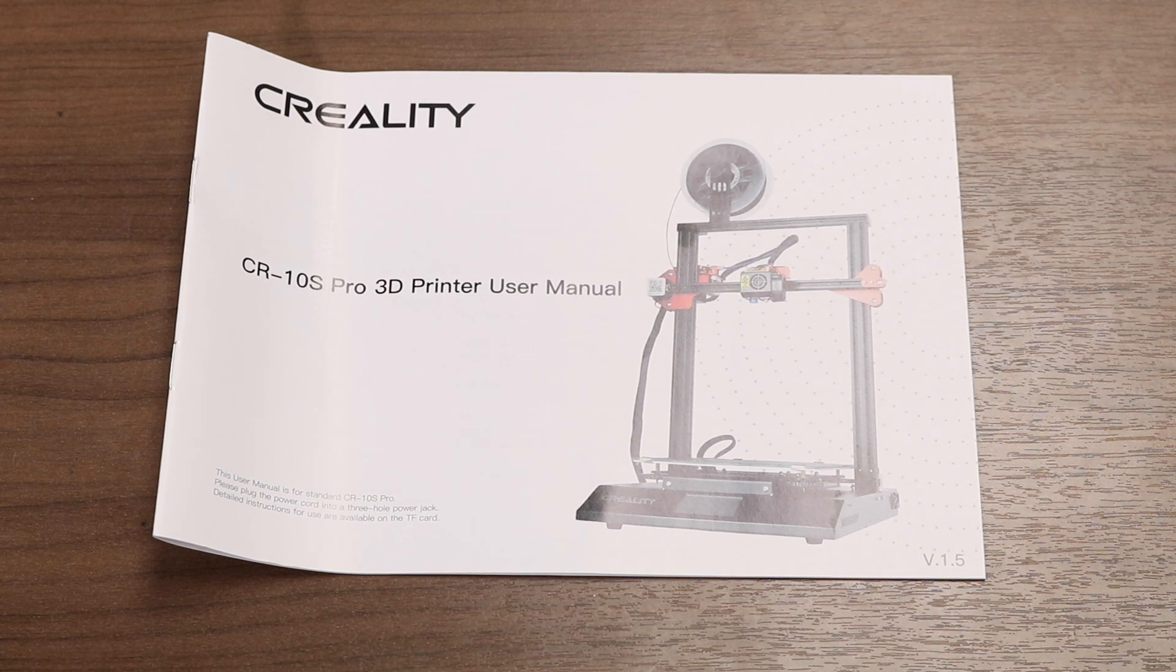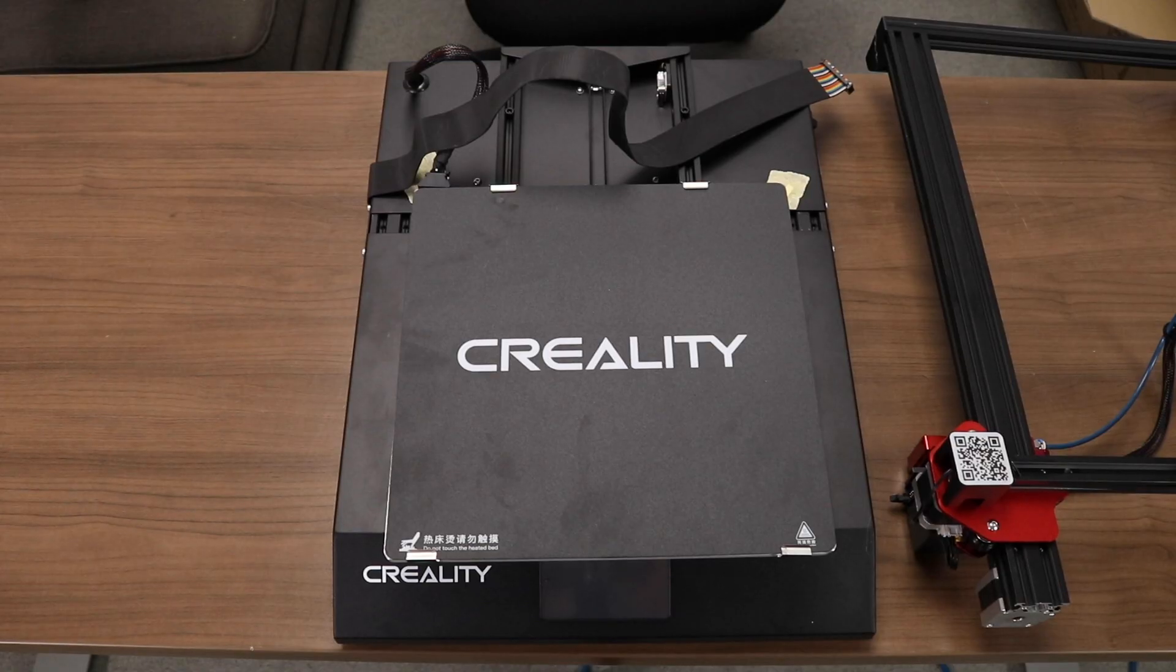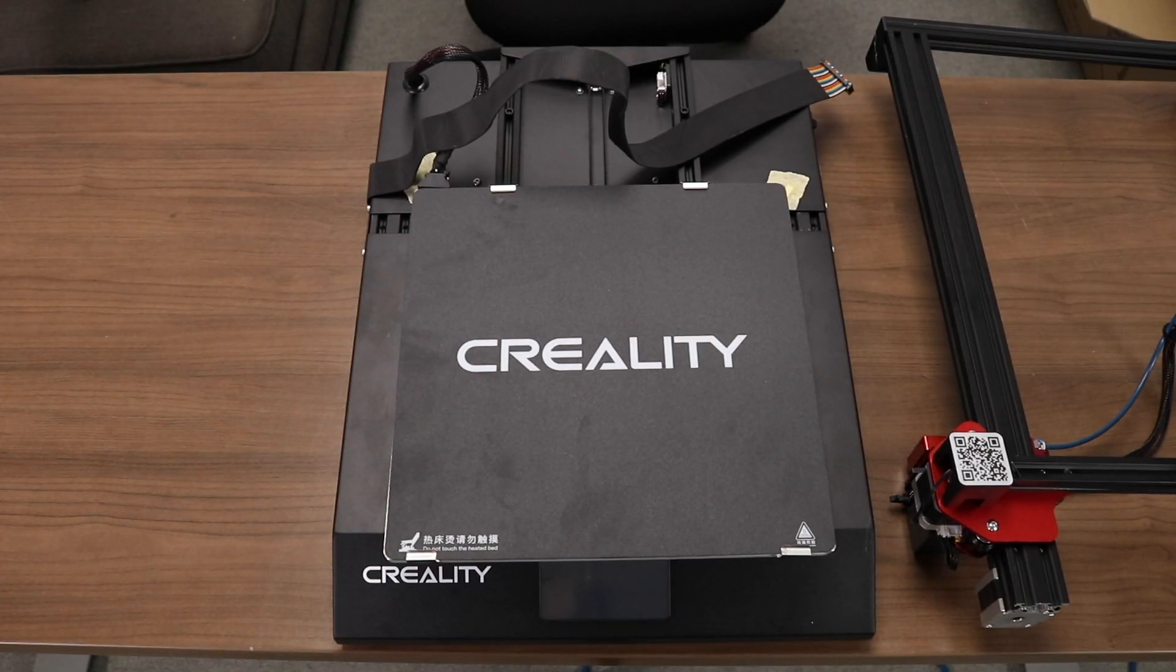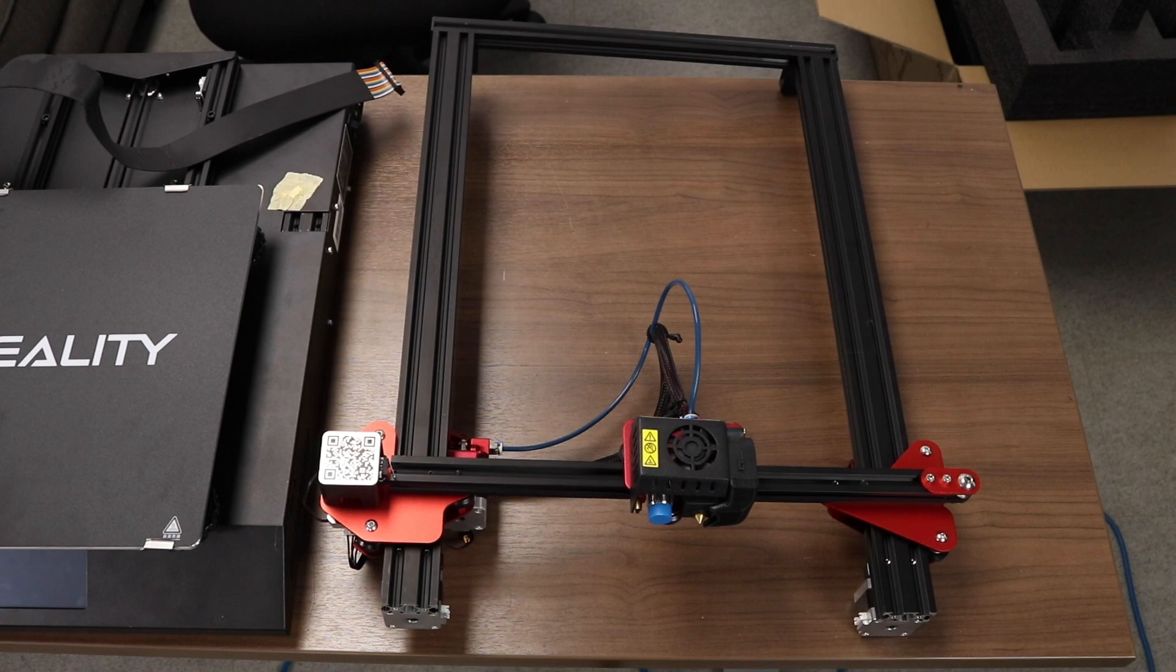Finally, we have our instruction booklet, which you can use in conjunction with this video to assemble the printer. As for the printer itself, it comes in two parts, including the base and the gantry.